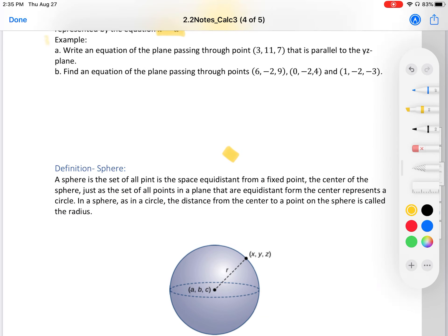Let's do an example. Write an equation of the plane passing through points (3, 11, 7) that's parallel to the yz-plane. I have yz. Do you notice how we don't have x? So we're going to have x = 3 as our plane that's parallel to yz-plane.